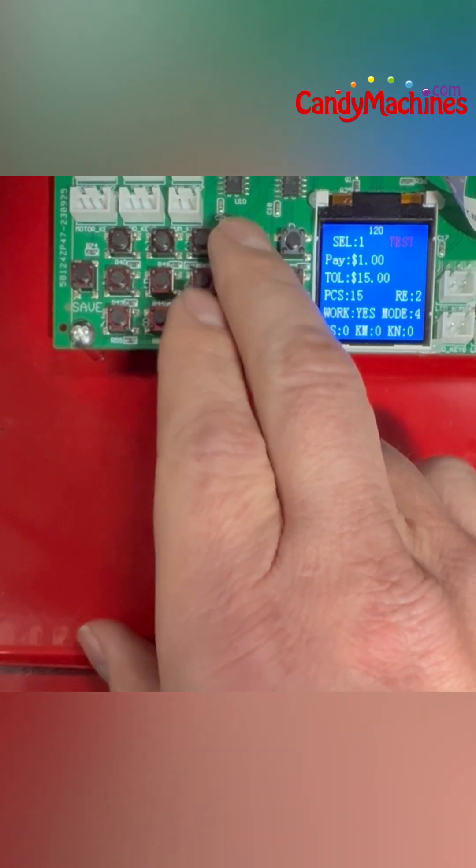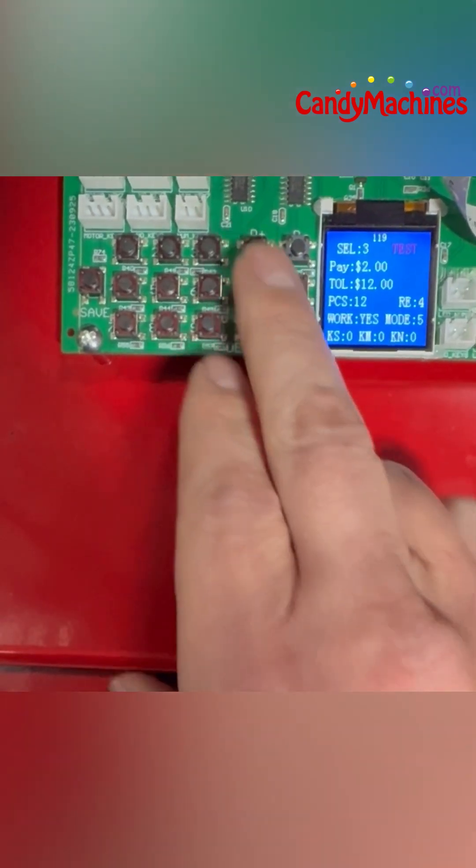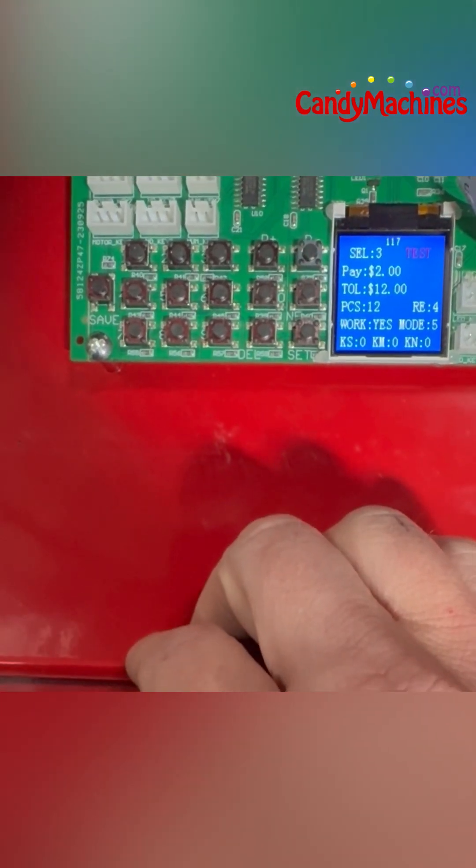We've got page up, page down. We can go verify that selection is at $2, what we saved it at.